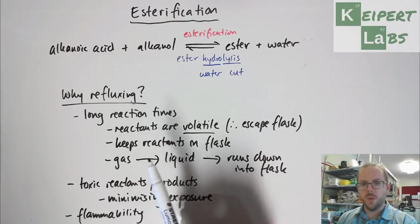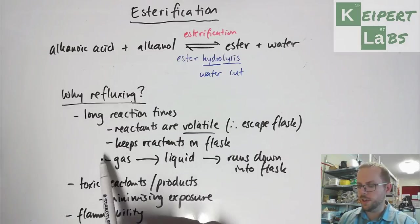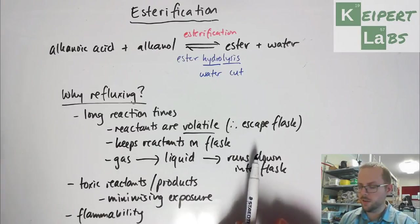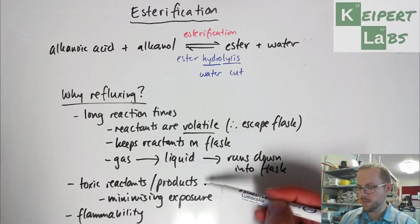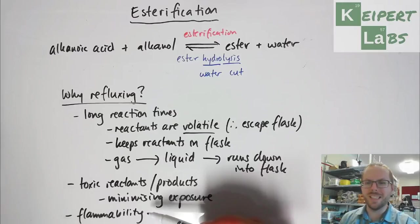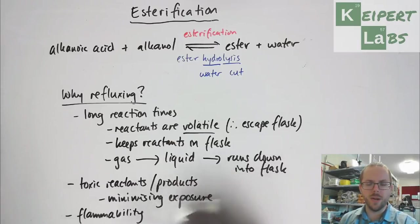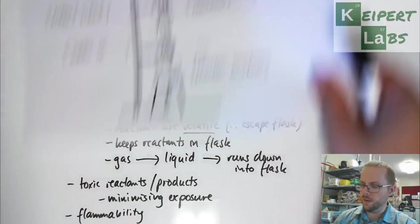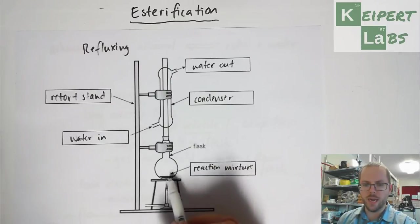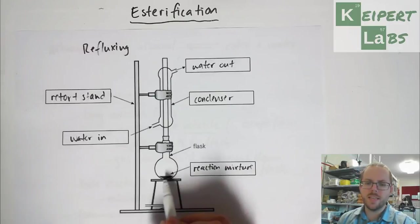So we're using refluxing to help keep our reactants in there so that the reaction can continue. We also want to keep them in there because they could be toxic and flammable. And so from a safety point of view, we want to maintain that there. And so what that also means is that we end up with our ester in our reaction mixture. So in the end, we start with only our reactants here. But in the end, we get a mixture of reactants and our products.